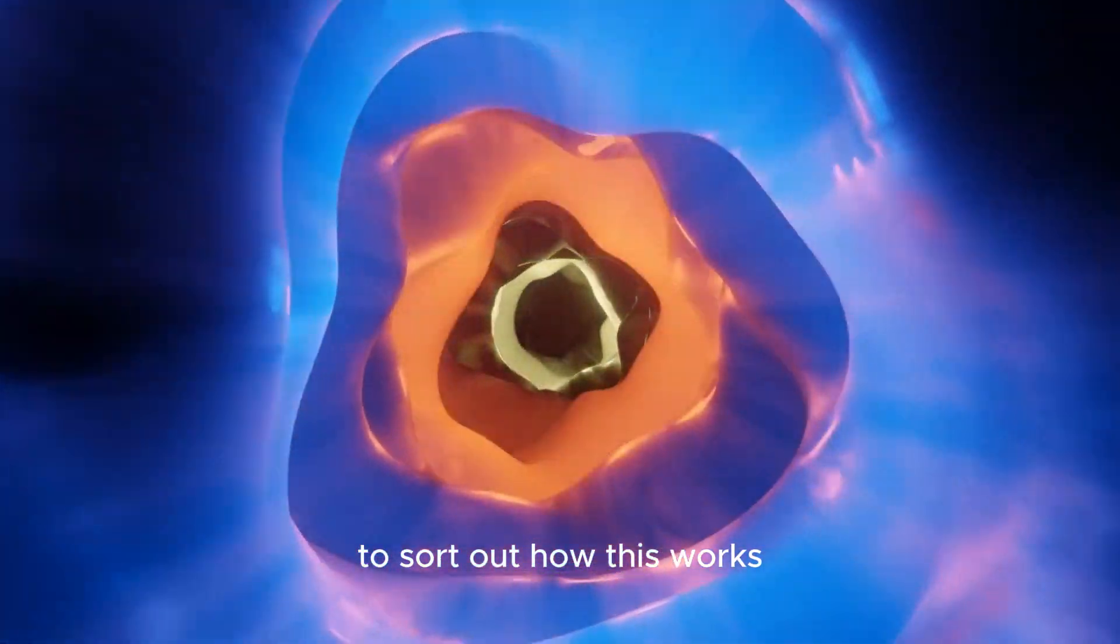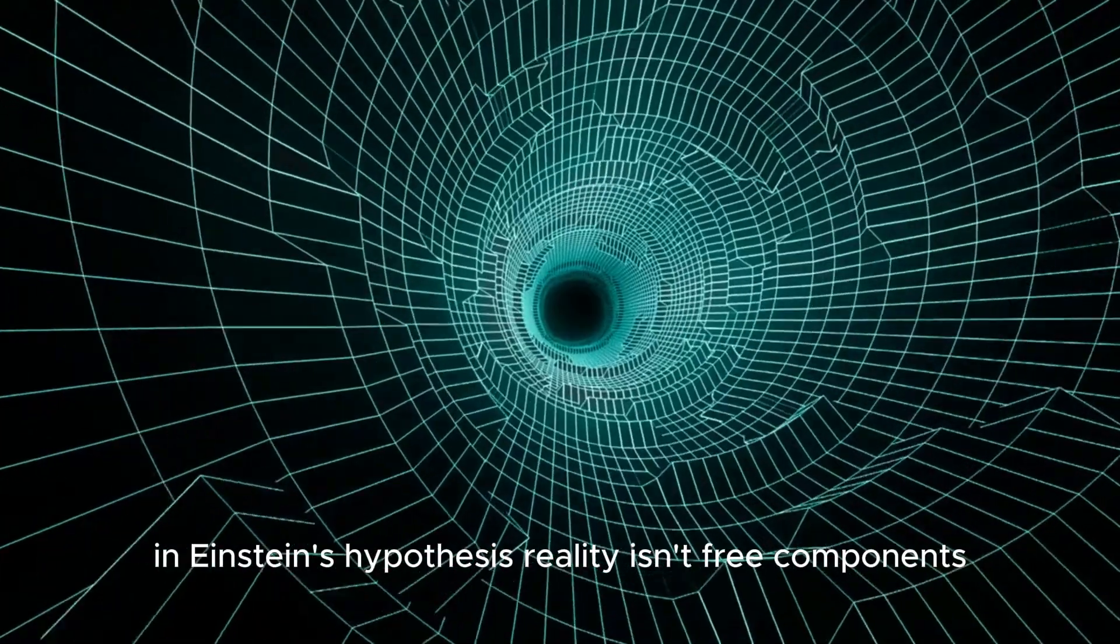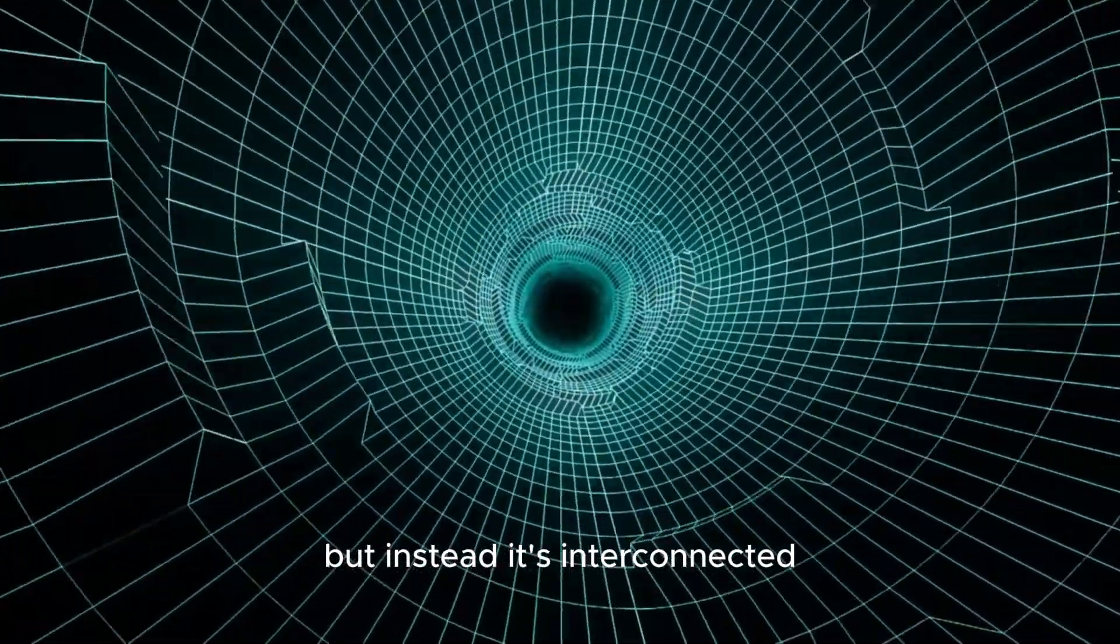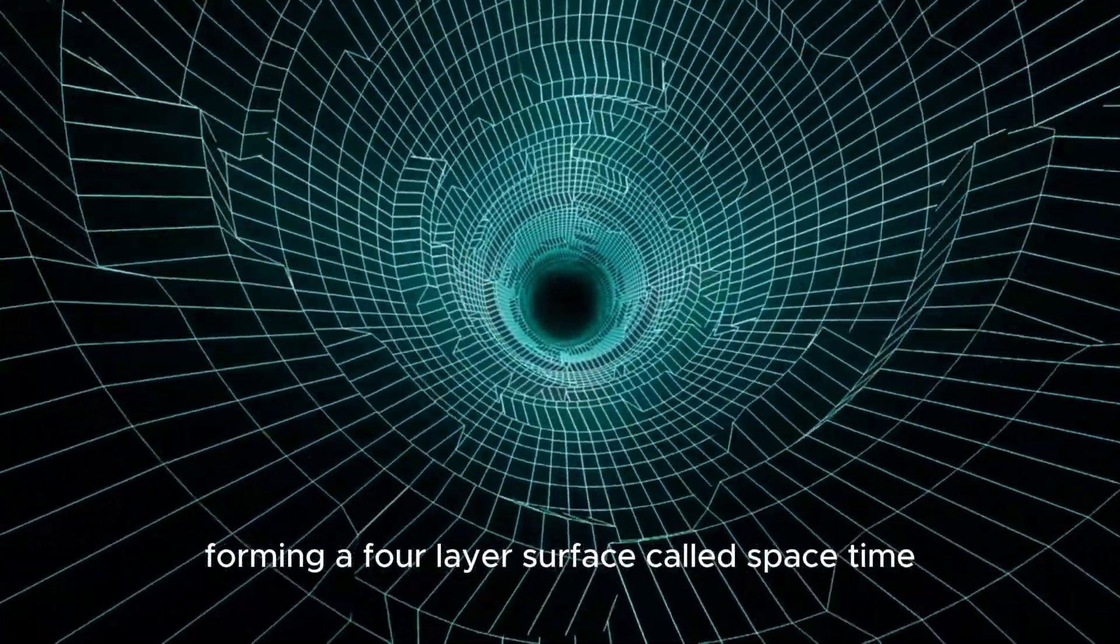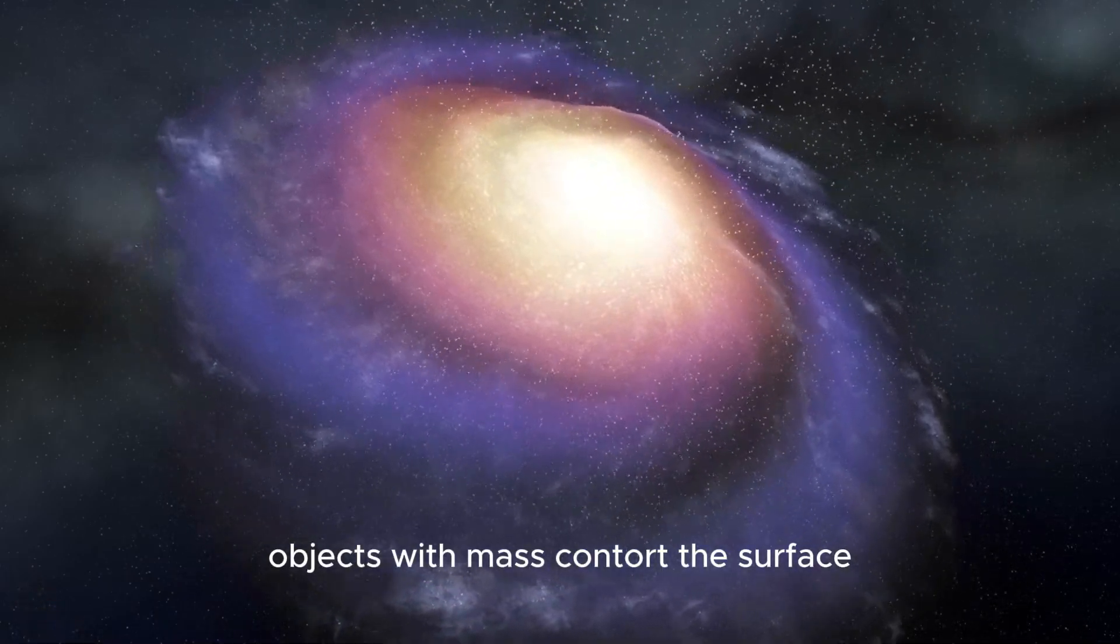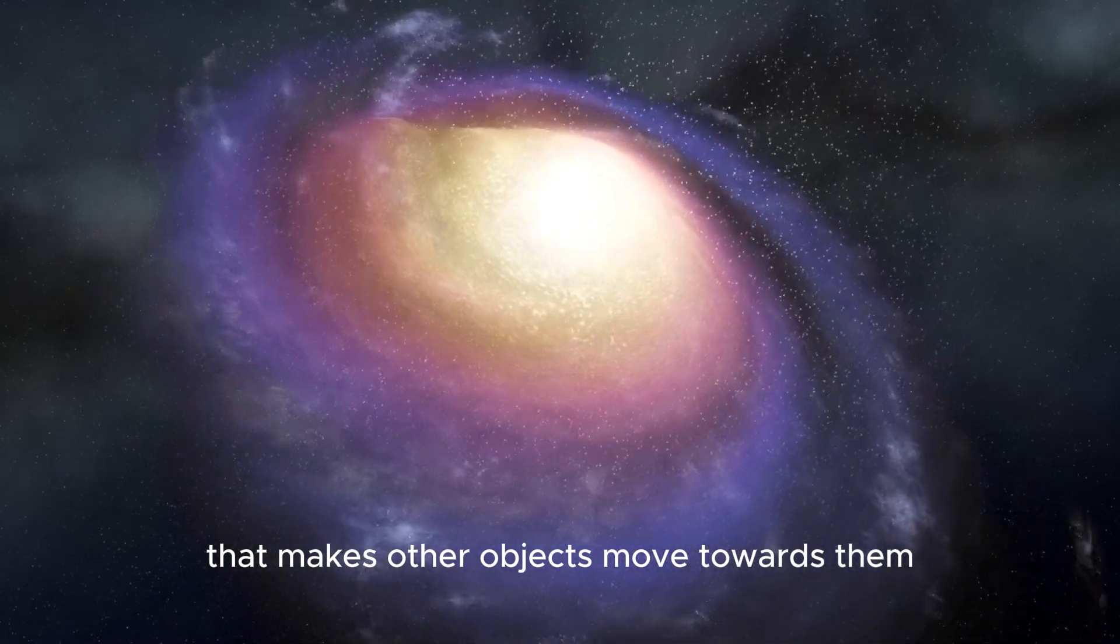To sort out how this works, we need to look at the thought of space-time in Einstein's hypothesis. Reality isn't free components, but instead, it's interconnected, forming a four-layer surface called space-time. Objects with mass contort this surface, making a gravitational field that makes other objects move towards them.